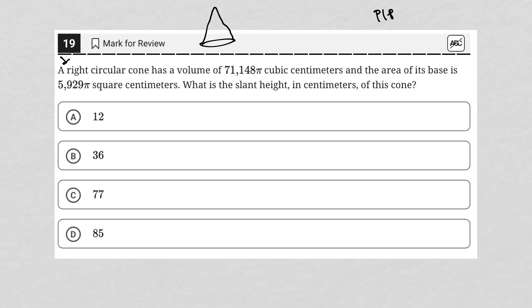The reference sheet for the math section of the SAT does give us the formula for the volume of a circular cone. That volume is one-third πr²h, so I'm going to just set that equal to 71,148π.